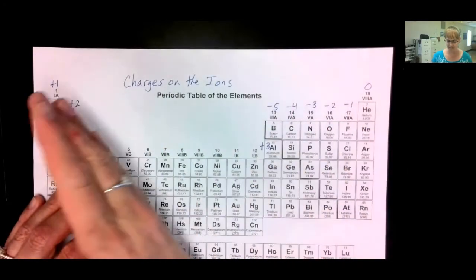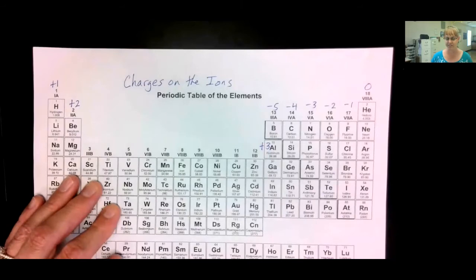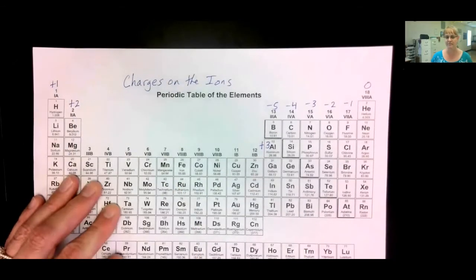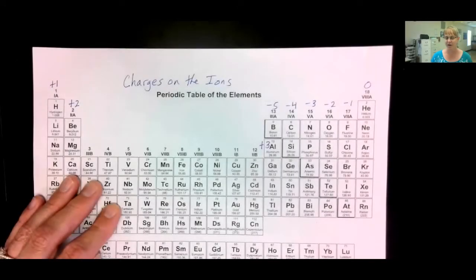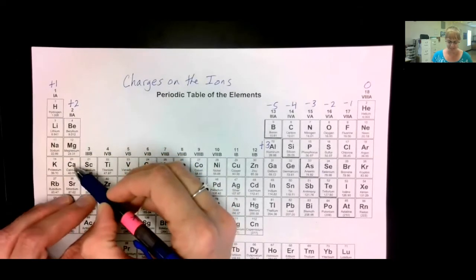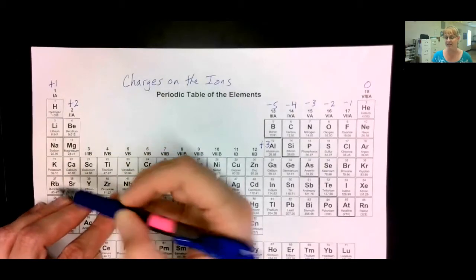Now, on the left hand side of the periodic table are all metals. And the metals all want to lose electrons and become ions which are more stable. Ions will always form compounds with other ions of the opposite charge. Now, when these ions get a positive charge, their name stays the same as it was before. You just put the word ion at the end. So, lithium becomes a lithium ion. Calcium becomes a calcium ion.